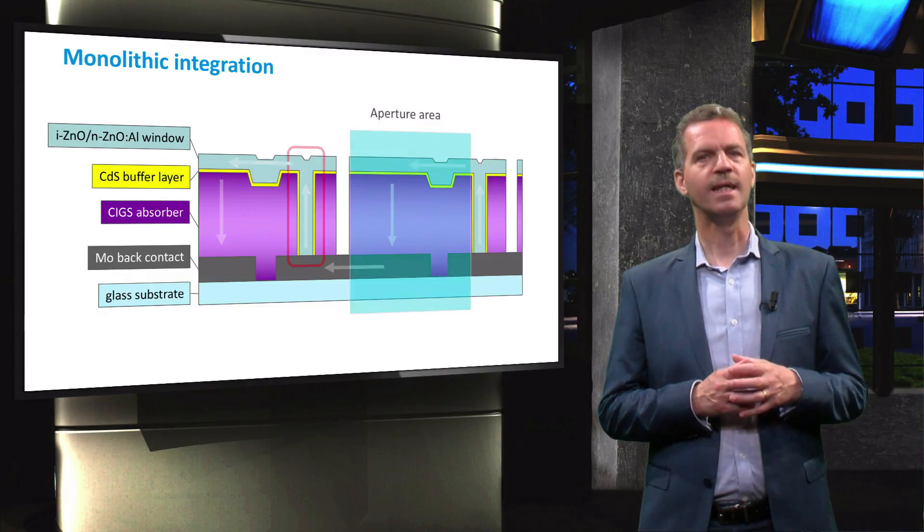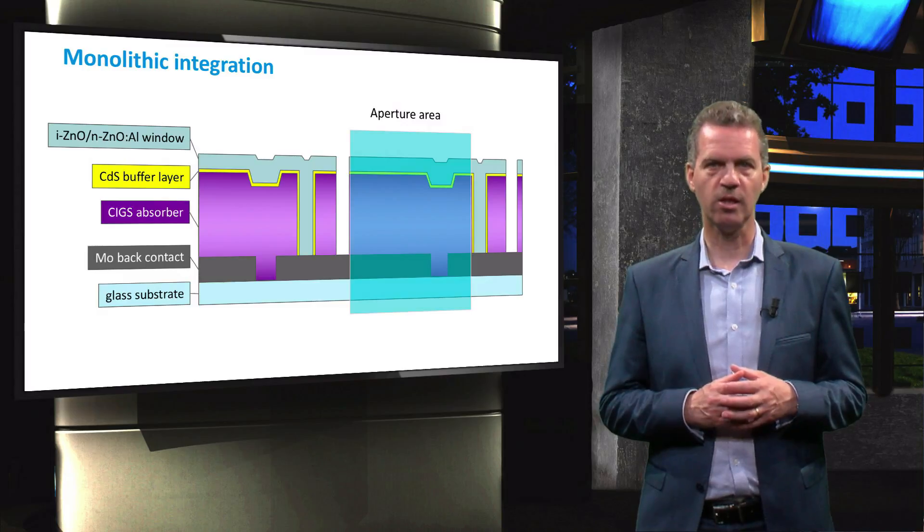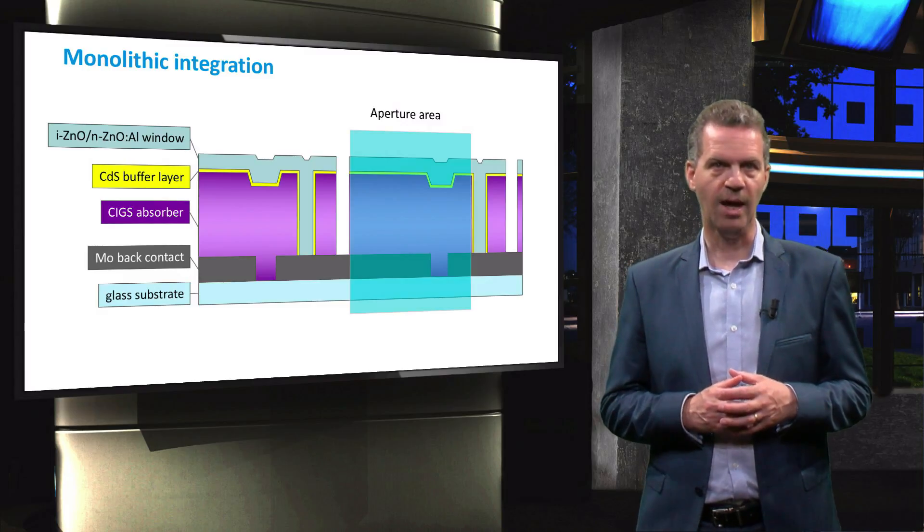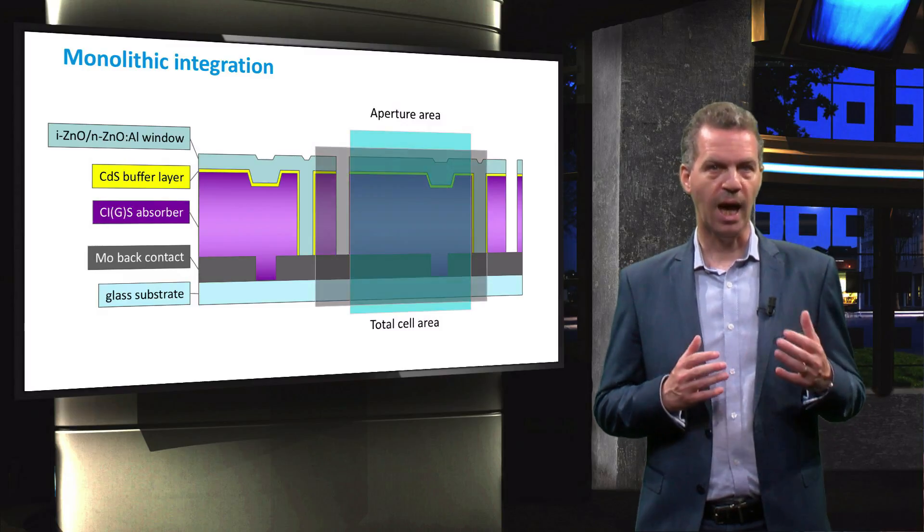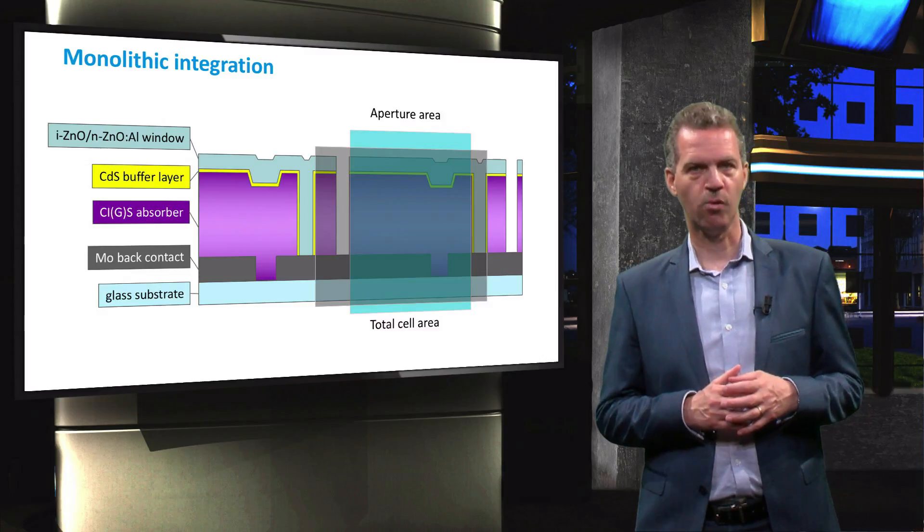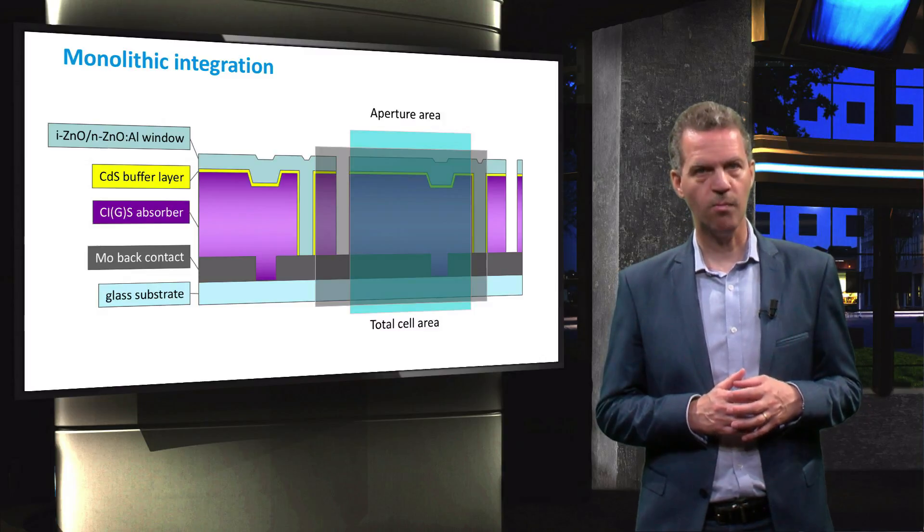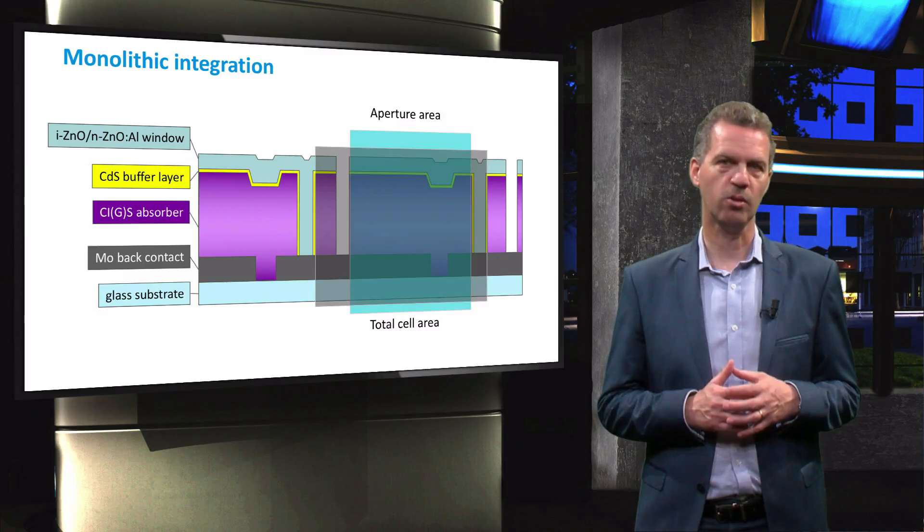One can clearly see that some of the cell's area is lost by the laser scribe and the interconnection. The aperture area that limits the operational cell is thus somewhat smaller than the total cell area.